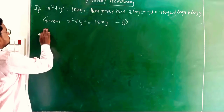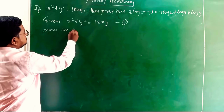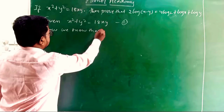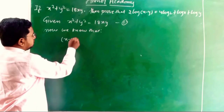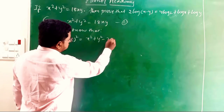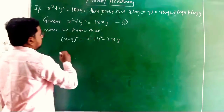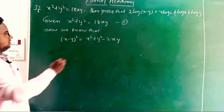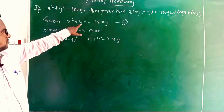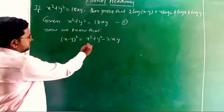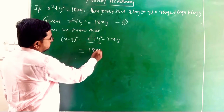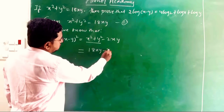We know the algebraic identity: (x − y)² = x² + y² − 2xy. This is a very important formula. From equation 1, x² + y² = 18xy, so we substitute: (x − y)² = 18xy − 2xy.